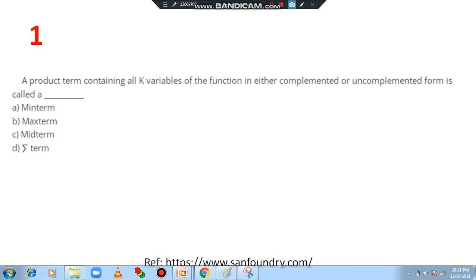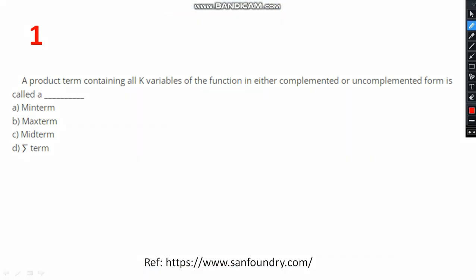First of all let us read the first question. A product term containing all k variables of the function in either complemented or uncomplemented form is called a dash. It is basically called a min term. You can note on the answer min term.